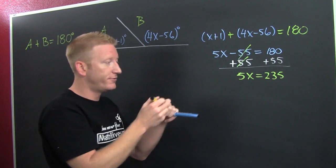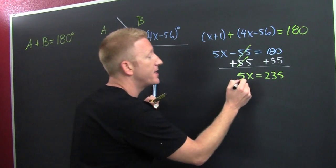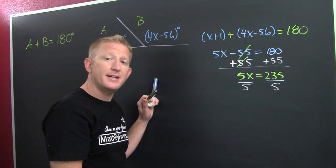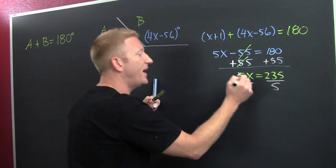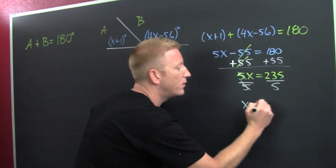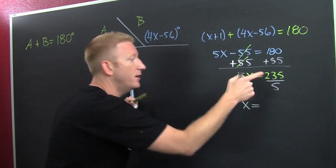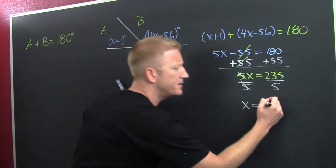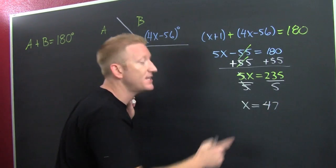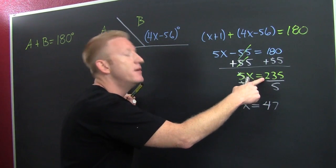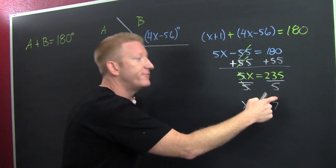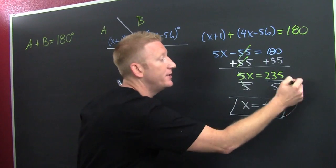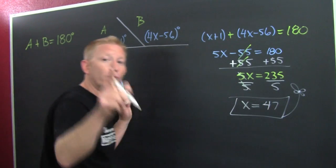On the right: 5 plus 8 is 13, carry the 1 — that's 235. Now divide both sides by 5, because what you do on one side you must also do on the other. And x turns out to be 47, because 5 goes into 235: 5 into 23 is 4, bring down the 5, 5 into 35 is 7.